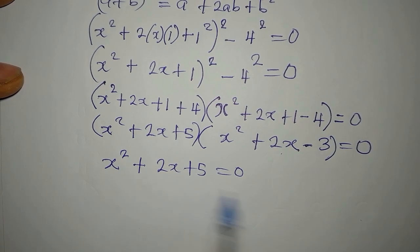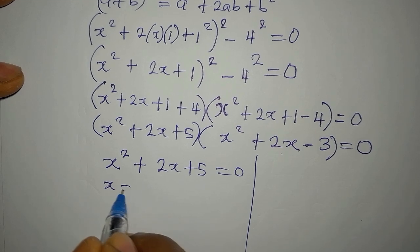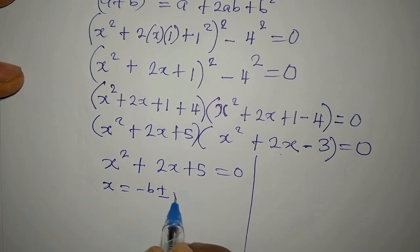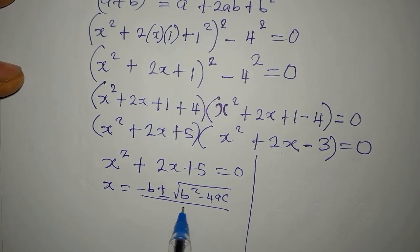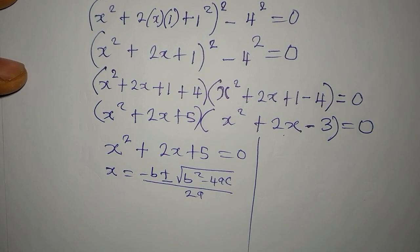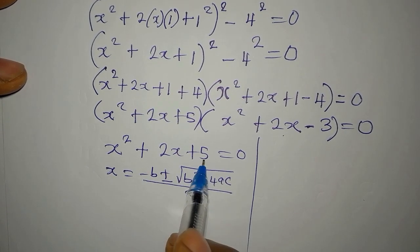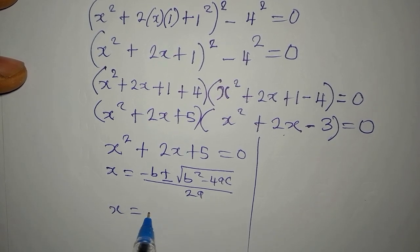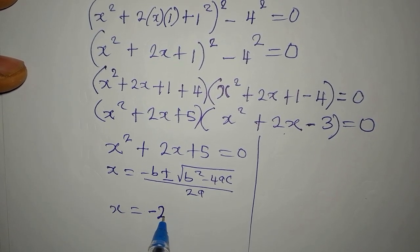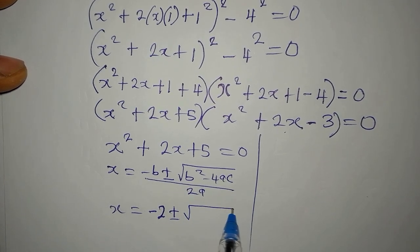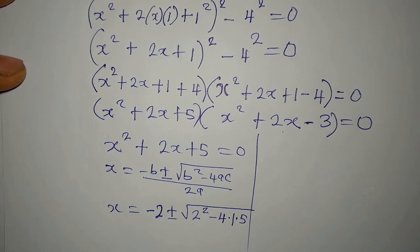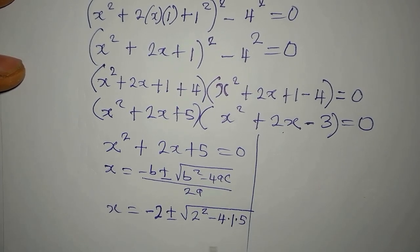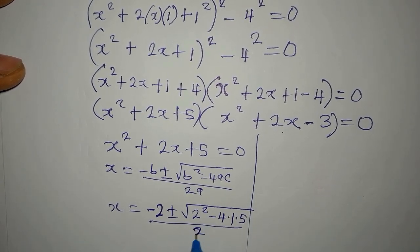I want to use the quadratic formula: x equals minus b plus or minus square root of b squared minus 4ac, all divided by 2a. Our a is 1, b is 2, c is 5. So x equals minus 2, plus or minus square root of 2 squared minus 4 times 1 times 5, divided by 2 times 1, which gives denominator 2.